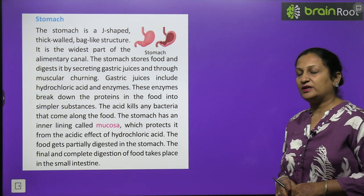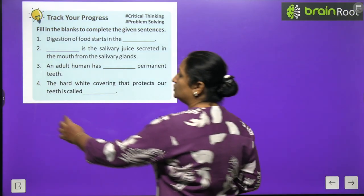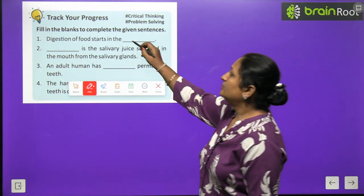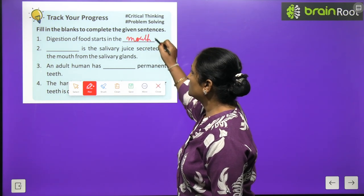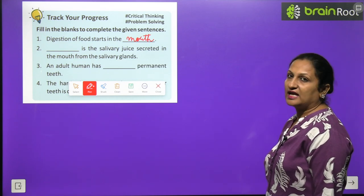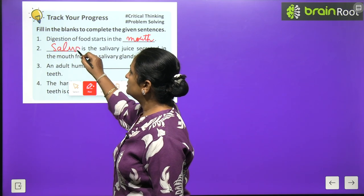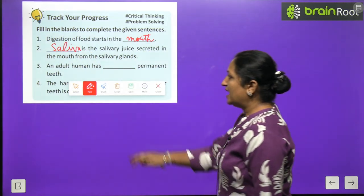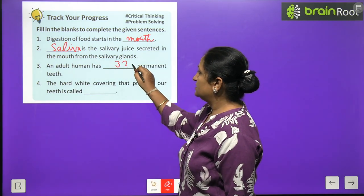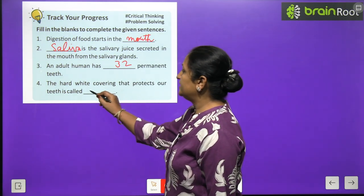Track your progress: Digestion of food starts in the mouth. Saliva is the salivary juice secreted into the mouth from the salivary gland. An adult human has 32 permanent teeth. The hard white covering that protects our teeth is called enamel.